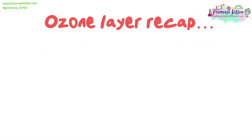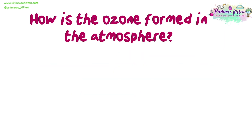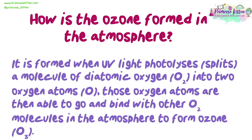We are going to start by recapping what we have already learned about the ozone layer. The ozone layer is in the stratosphere — the second layer from the ground in our atmosphere — and is made of three oxygen atoms. It is formed when UV light photolyzes, or splits, a molecule of diatomic oxygen O2 into two oxygen atoms. Those oxygen atoms are then able to bind with other O2 molecules in the atmosphere to form ozone, O3.